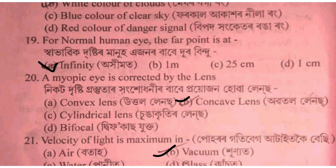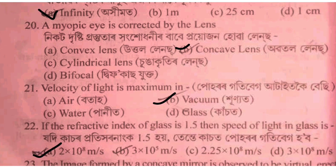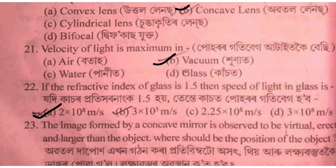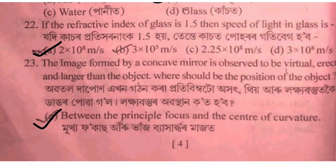The refractive index of glass is 1.5. Then the speed of light in glass is — we use the formula. If we divide the speed of light 3 × 10^8 meter per second by 1.5, we get 2 × 10^8 meter per second.